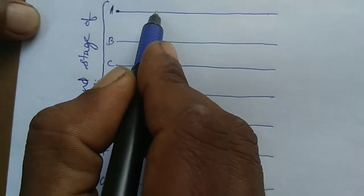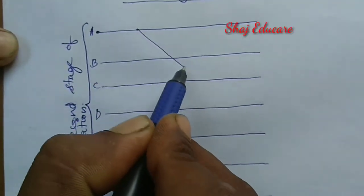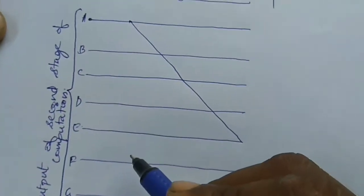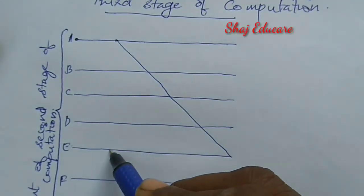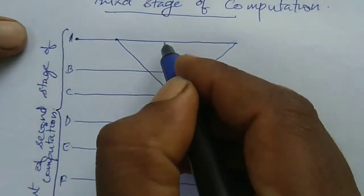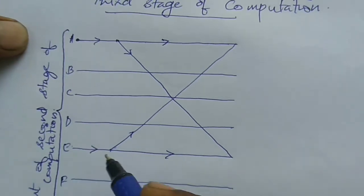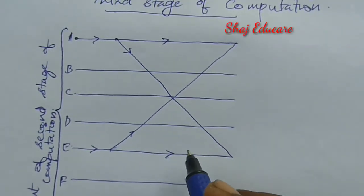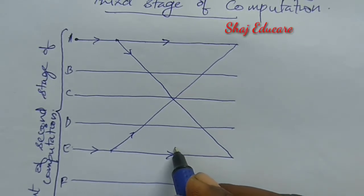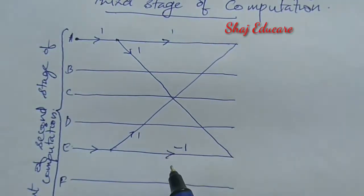How to draw the butterfly diagram: first, start from the first line — that is A — going to the fifth line, which is E. Draw the connection from A towards E, and also complete the upward connection from E back to A. Put the arrowheads: this is going upward, this towards right, this towards right. Now put the gain on each flow path — the gain should be minus 1 on the lower branch, and in all other cases the gain equals 1. The phase factor here is W8 raised to 0.